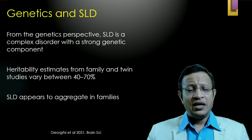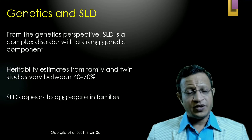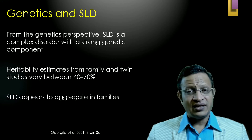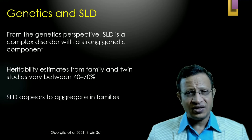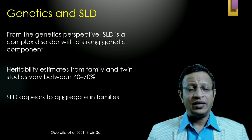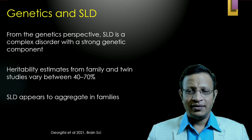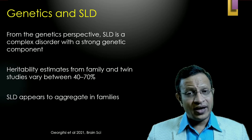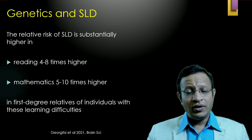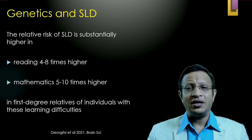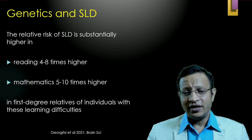From the genetics perspective, SLD is a complex disorder with a strong genetic component. Heritability estimates from family and twin studies indicate 40 to 70 percent chances that if you see a child with SLD, one of the parents also has SLD. SLD appears to aggregate in families — the relative risk is substantially higher: reading disorder 4 to 8 times higher, and mathematics or calculation problems 5 to 10 times higher in first-degree relatives of individuals with SLD.